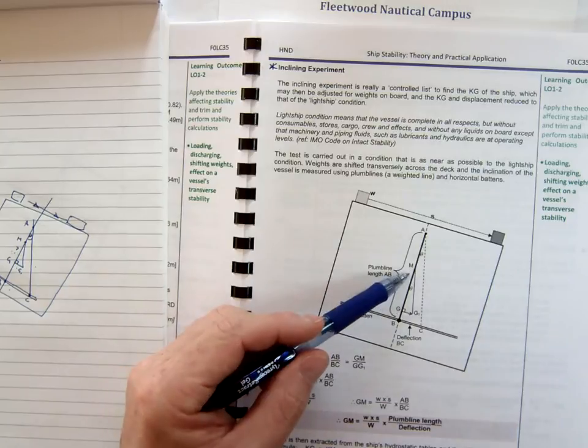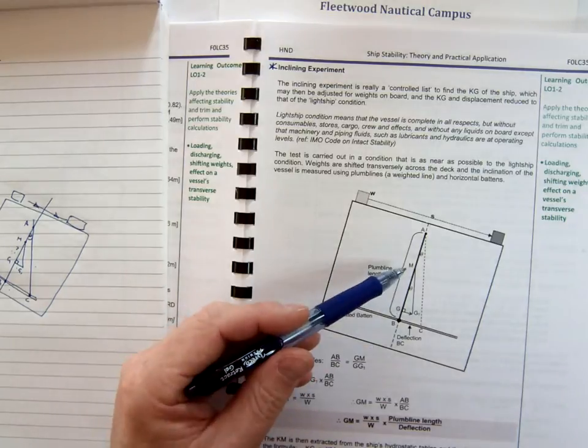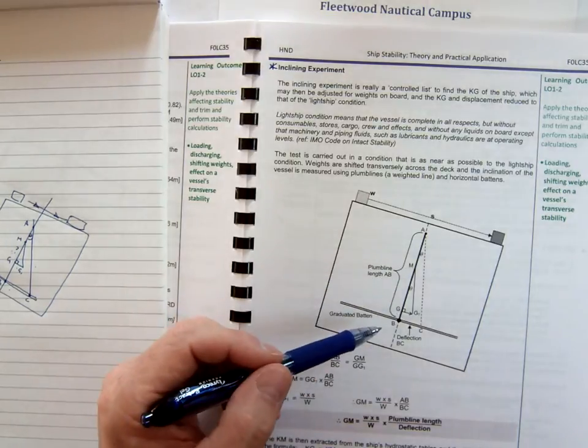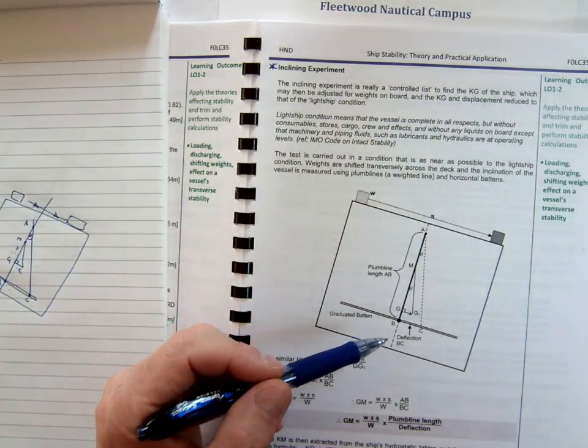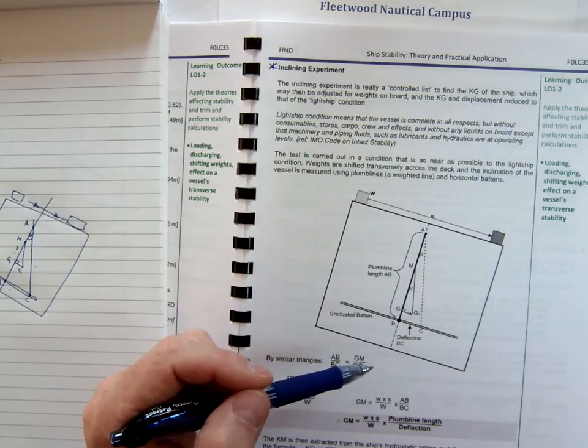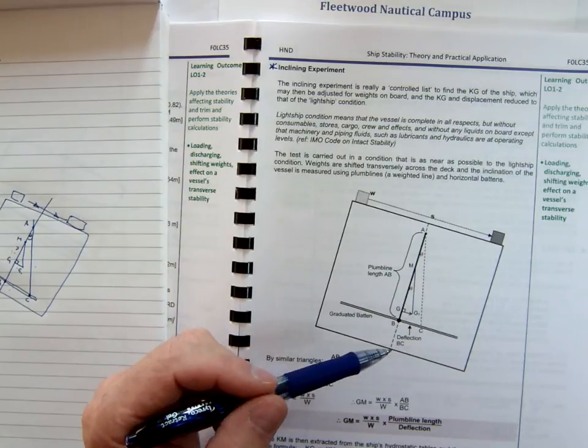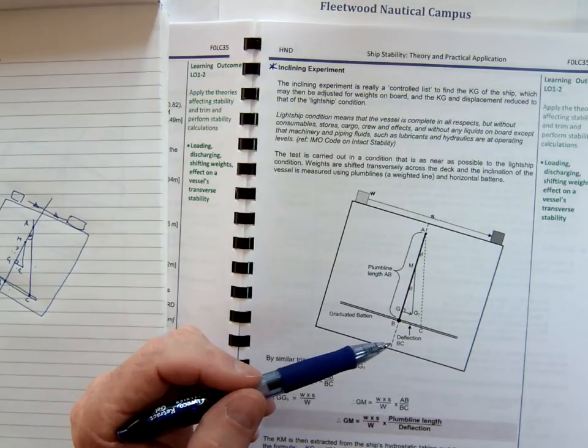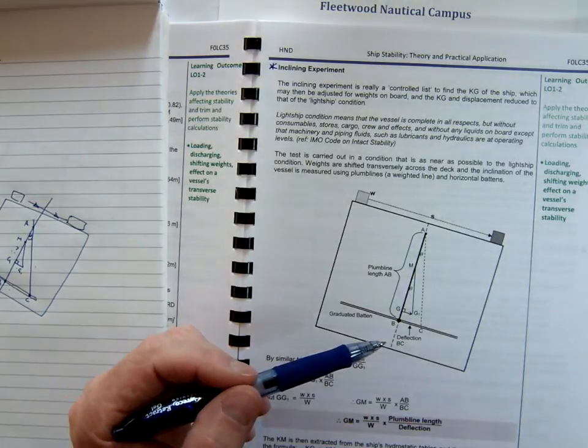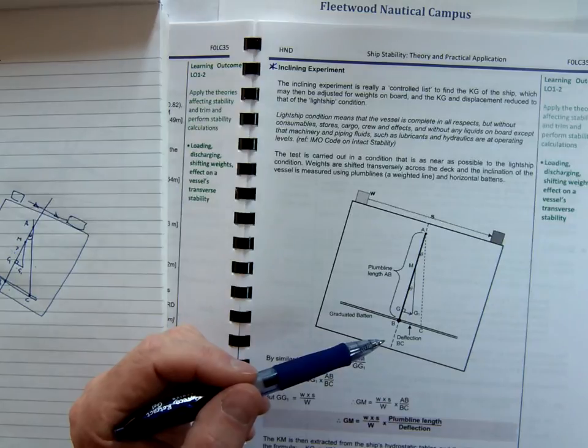Once we've found that gm, subtract it from the km, and that gives us our fluid kg at that point. Of course, this isn't our lightship kg. What we then have to do now, with this fluid kg, is start drawing up a table and subtracting the various weights that are existing on board at the moment. We'll look at that in an example.